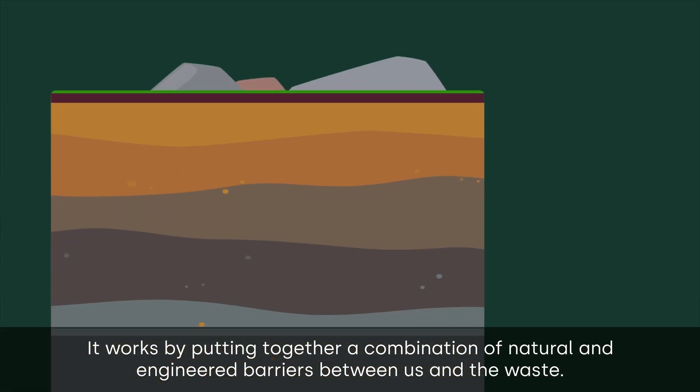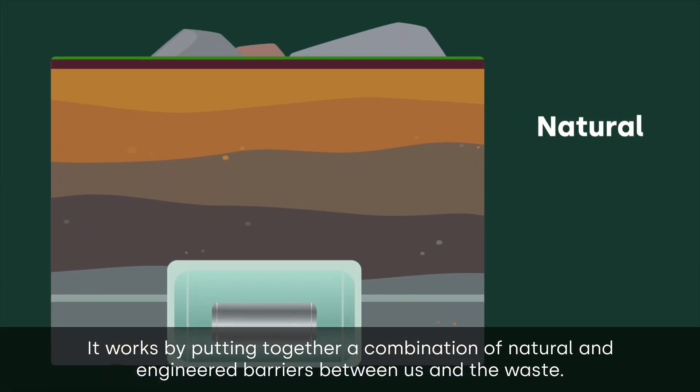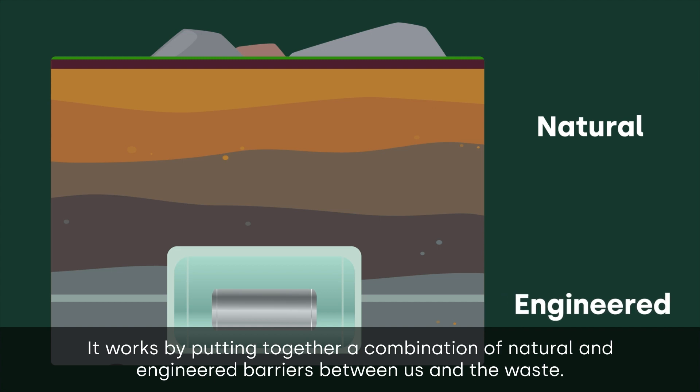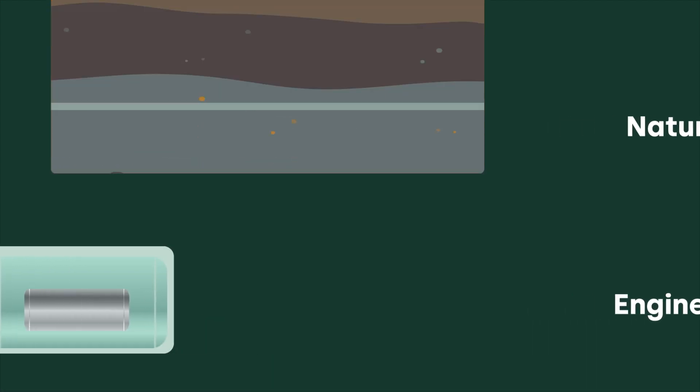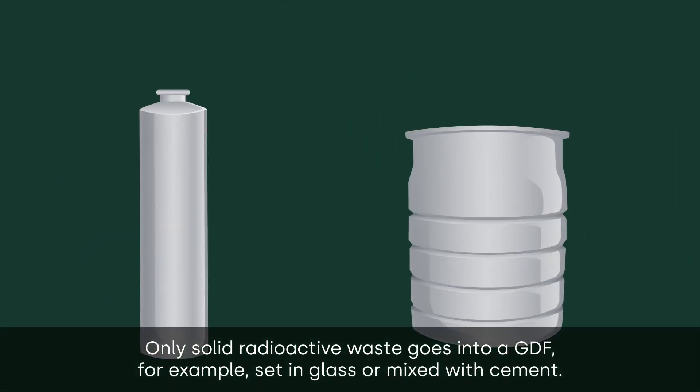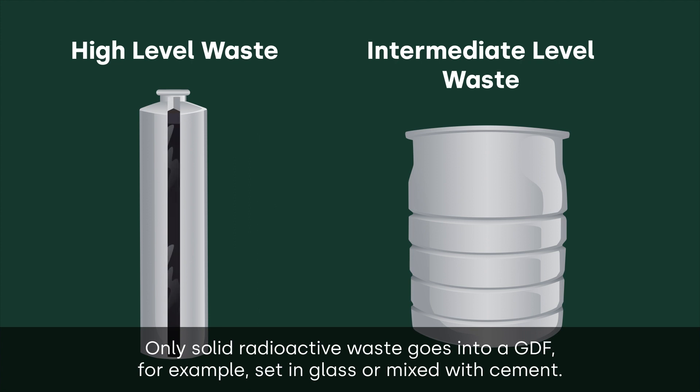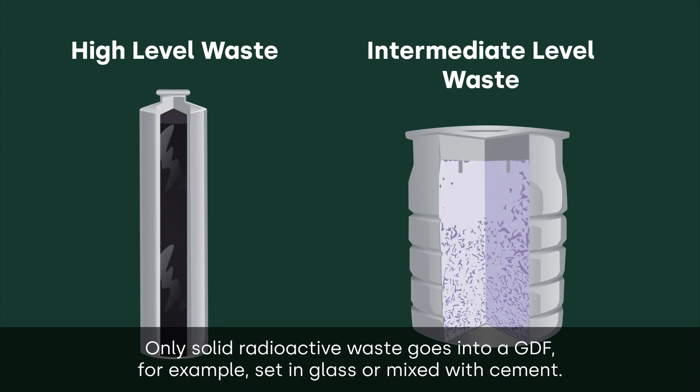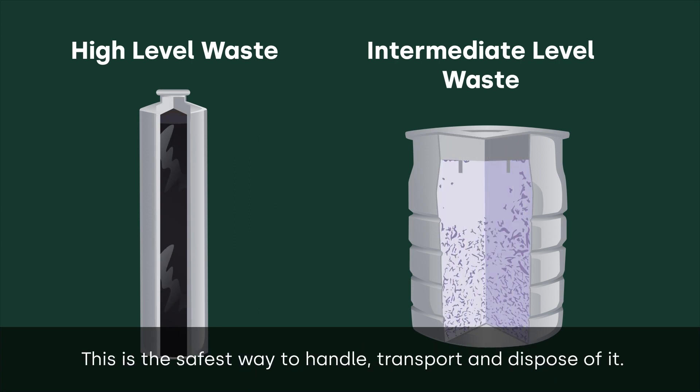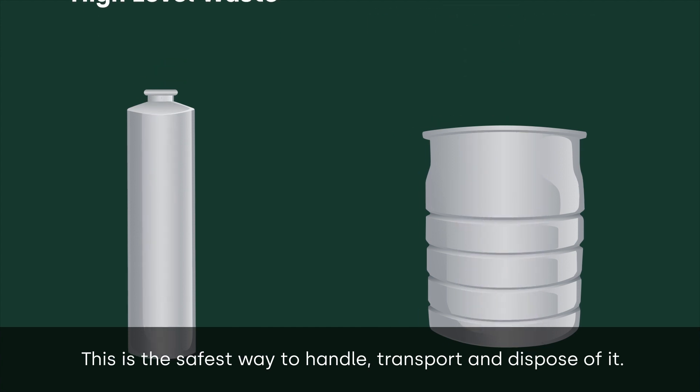It works by putting together a combination of natural and engineered barriers between us and the waste. The first barrier: only solid radioactive waste goes into a GDF, for example, set in glass or mixed with cement. This is the safest way to handle, transport, and dispose of it.